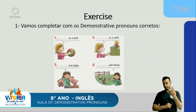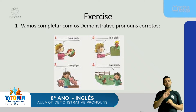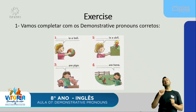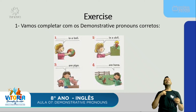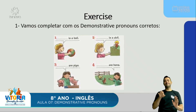Na quarta situação, temos a menina apontando para galinhas, 'hens', que estão distantes dela. Se as galinhas estão distantes, posso utilizar 'this', 'these', 'that' ou 'those'. Ela está distante, e 'hens' está no plural. Se está no plural e distante, o demonstrative pronoun correto vai ser o 'those'. 'Those are hens'.